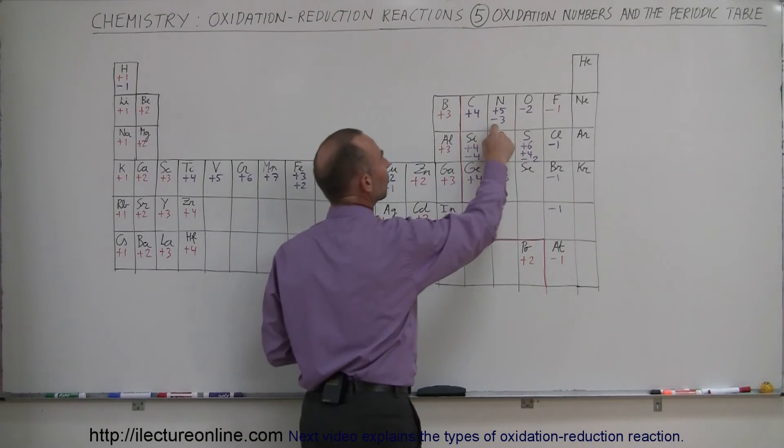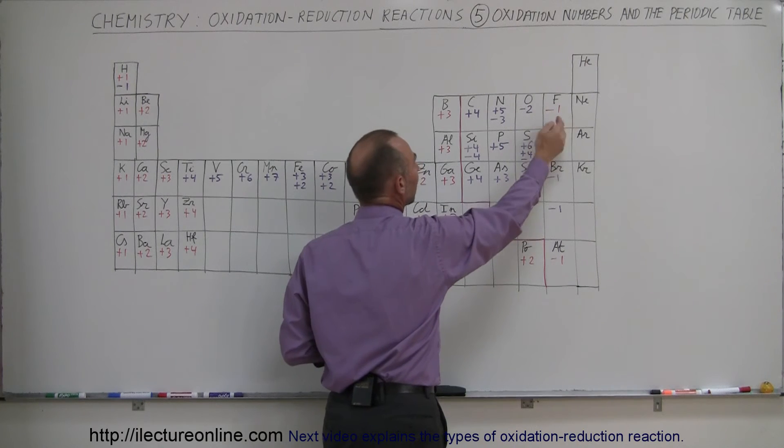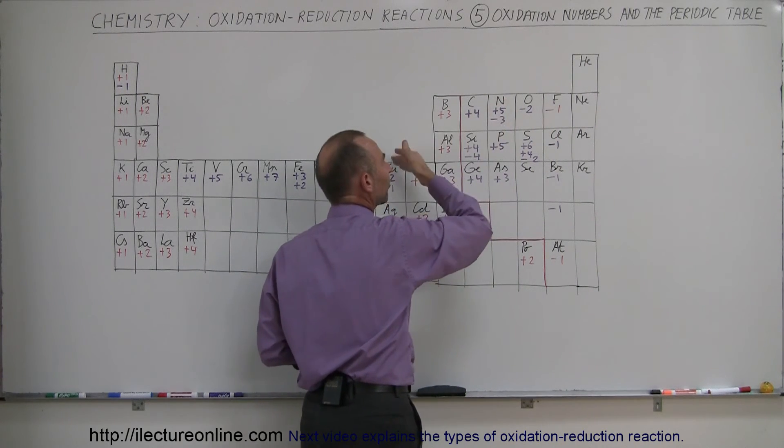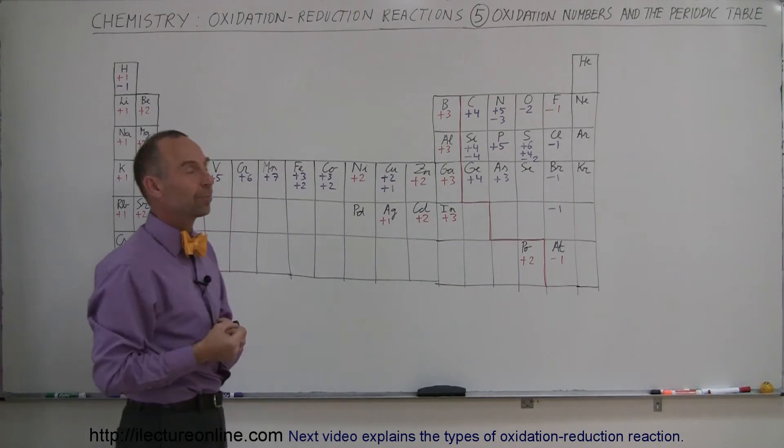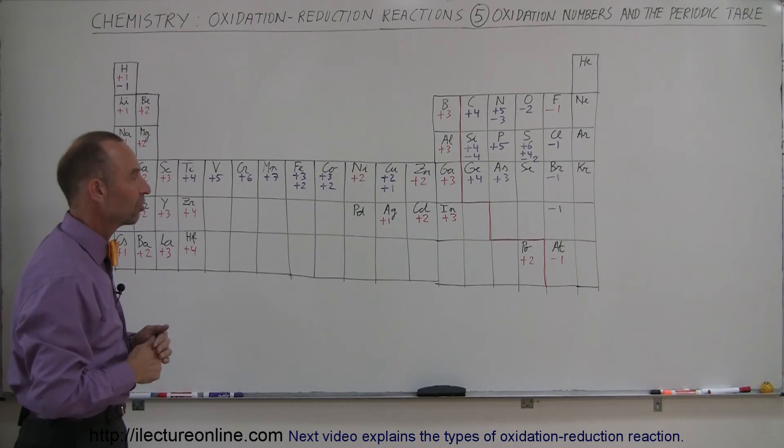So typically, for example, nitrogen, when it combines with something to the right, like oxygen or fluorine, it's more likely to donate electrons. If it binds with something else to the left of it, it's more likely to accept electrons, and therefore become electronegative, and have a negative oxidation number.